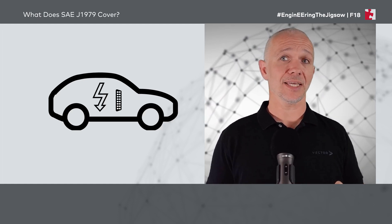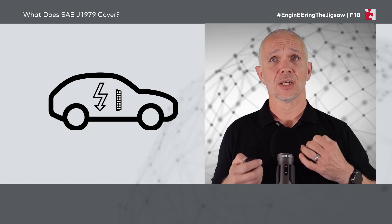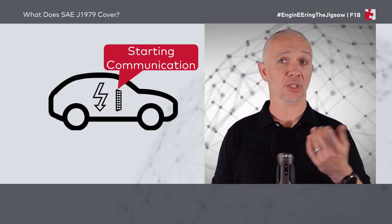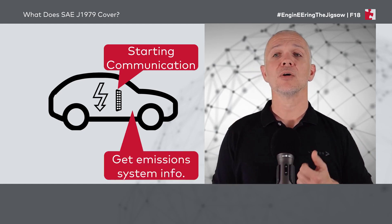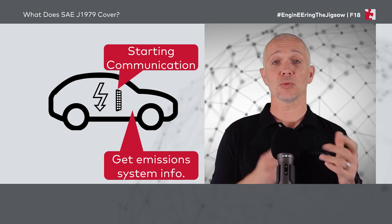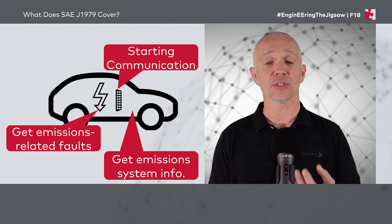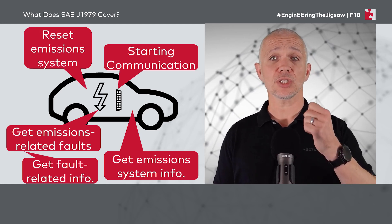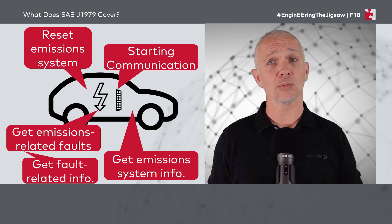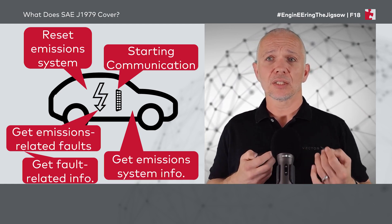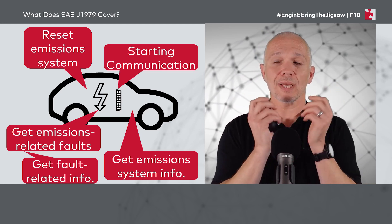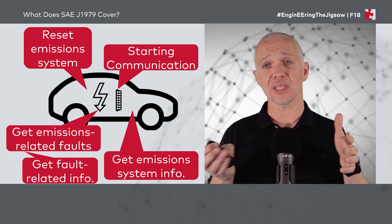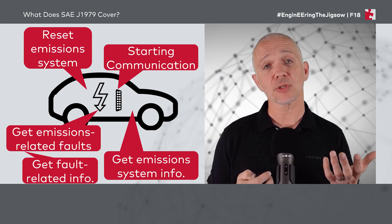So what does SAE J1979 cover? We've said it specifies the requests and responses, but how? What kind of requests and responses can we send? Well, firstly we need to be able to start communication with the vehicle and the ECUs inside the vehicle. We need to be able to get information about the emissions system because all of this is focused on emissions control. We want to get emissions-related faults from the vehicle and also information that relates to those faults. Additionally, if we've been making some changes to the emission system to try to fix a fault, we want to be able to reset it. Other things in the standards include ways to test the emission system, to control devices within the emission system, and to get general information about the vehicle — such as the vehicle identification number or VIN, which you can retrieve using OBD.